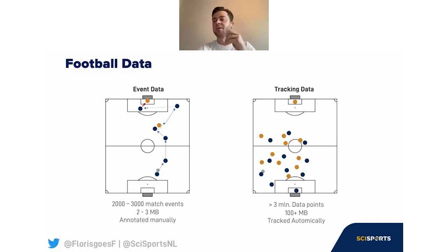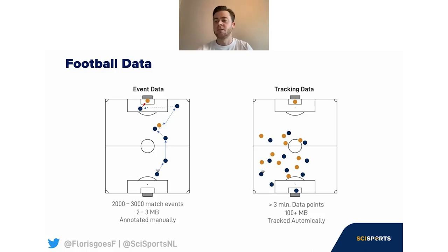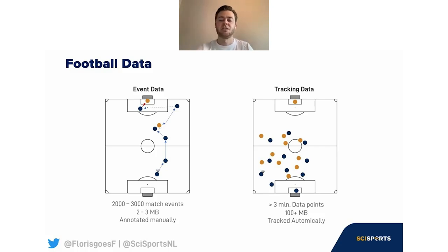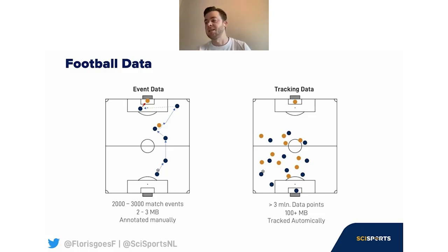Before we dive in, it's important to understand what kind of data we're talking about when it comes to football data. In our case we typically work with two different data streams. On the one hand we have the event data stream, containing manually annotated event data annotated by human observers, which mostly concerns on-ball events. This stream represents the match as a time series of actions — passes, tackles, shots, goals — with about two to three thousand events per match, roughly two to three megabytes in size.